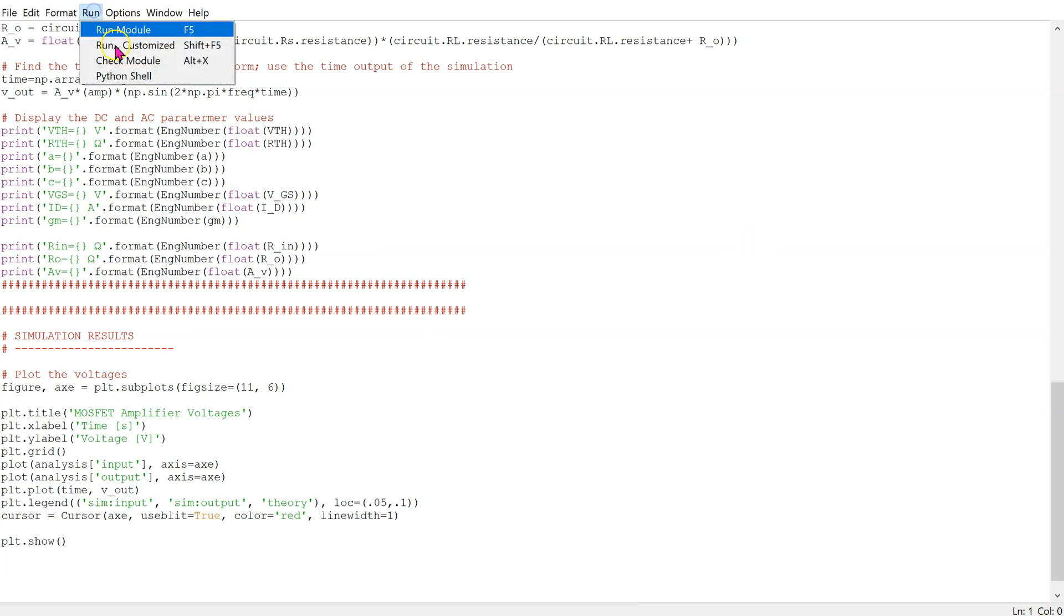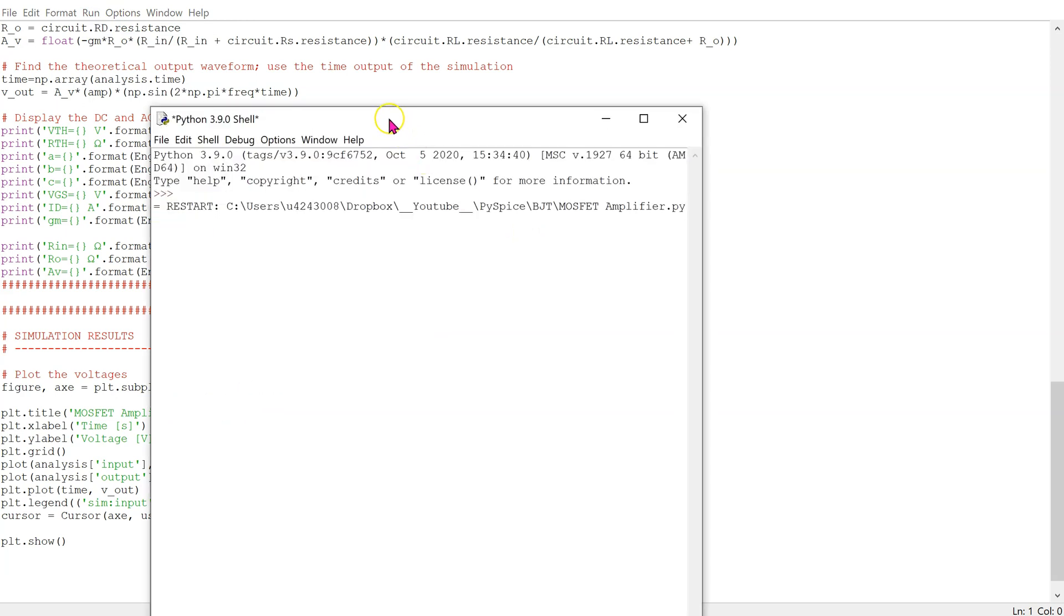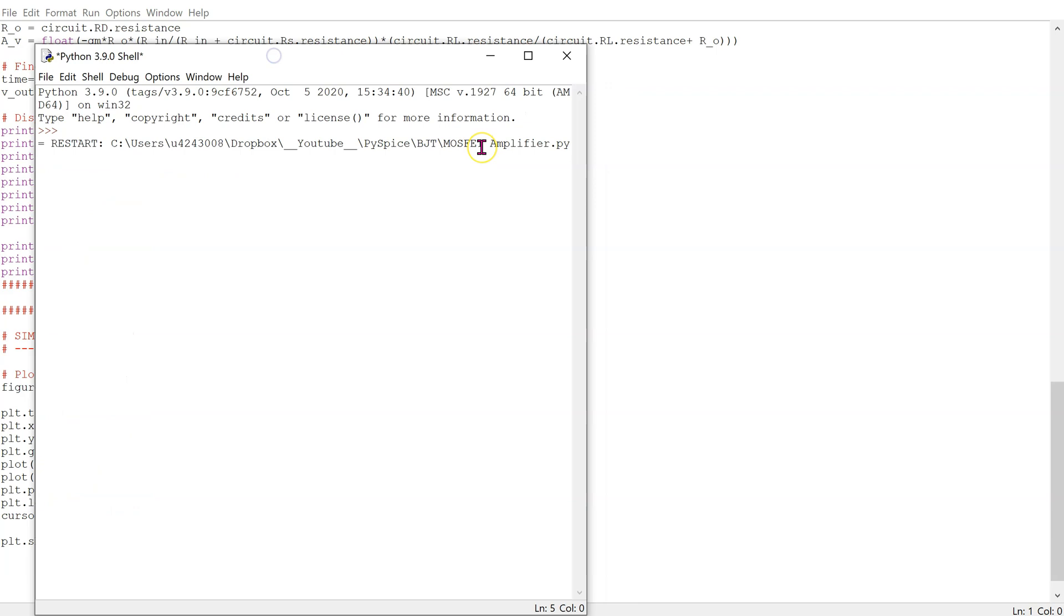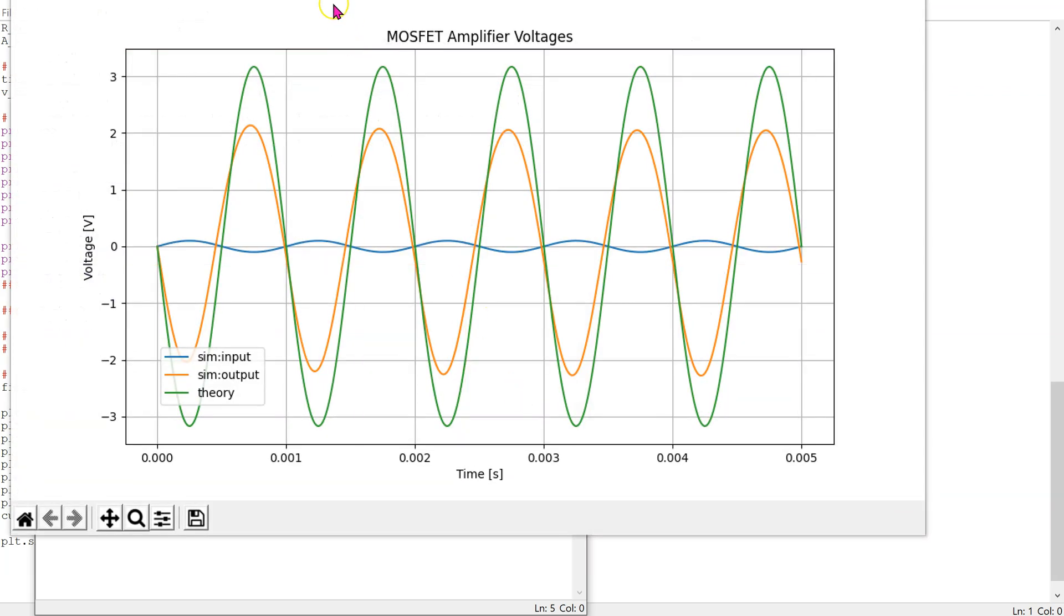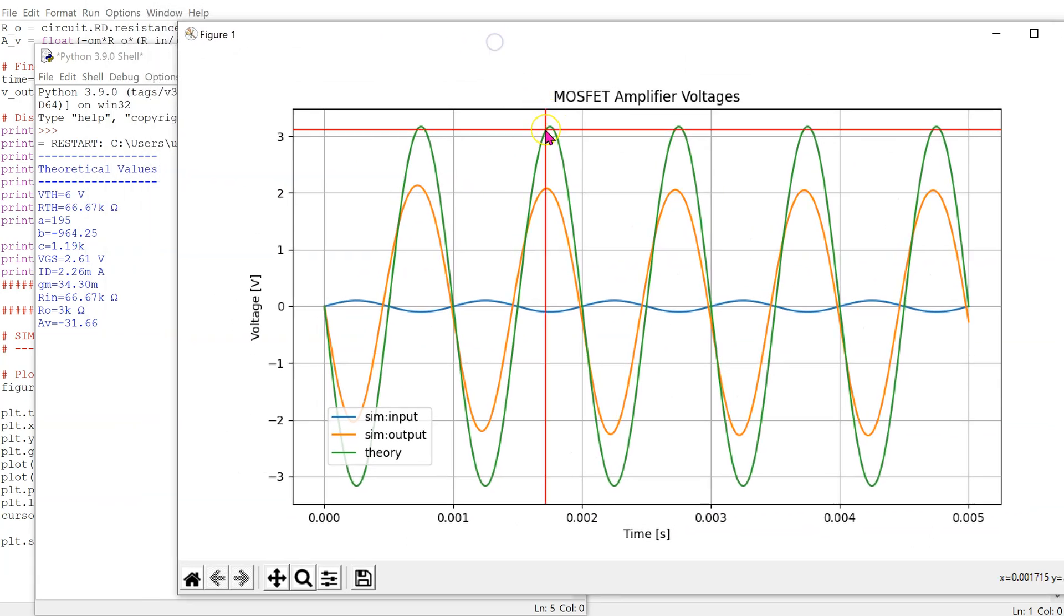When we simulate, we can obtain the theoretical values as well as the simulation results. We can see that the simulation output voltage peak is around 2.1 volts, which is close to the LTSPICE result. The theoretical value has a peak of around 3 volts since it is based on many simplified assumptions.